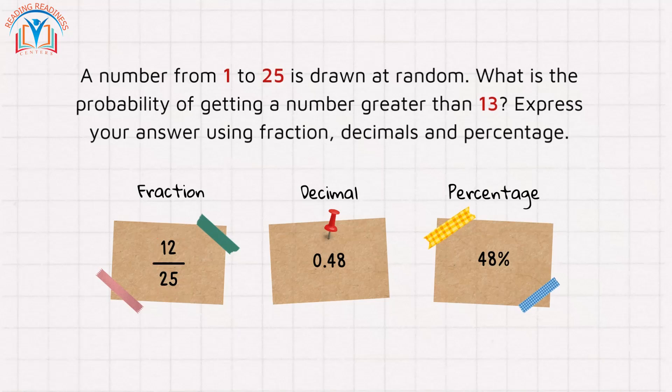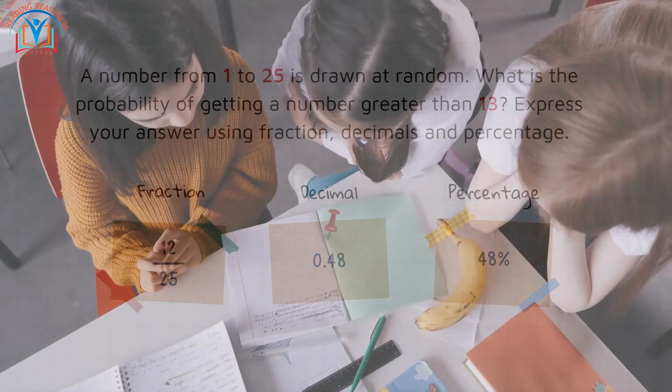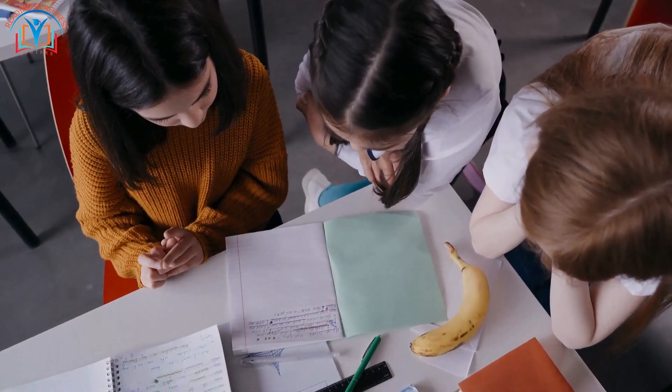As a decimal, 12/25 is 0.48. As a percentage, 0.48 is 48%. Amazing, right?